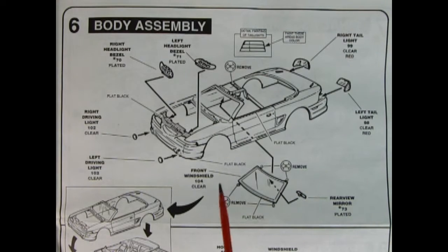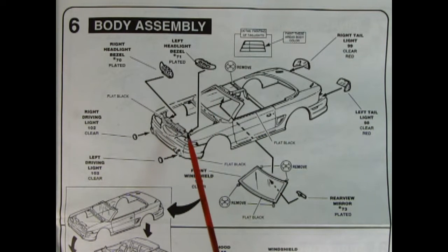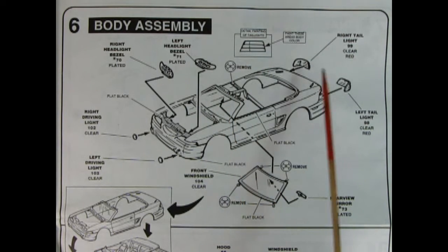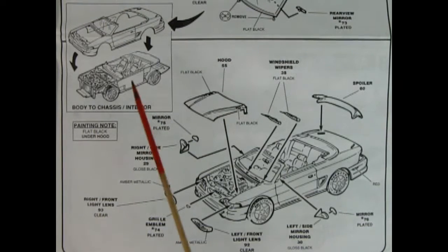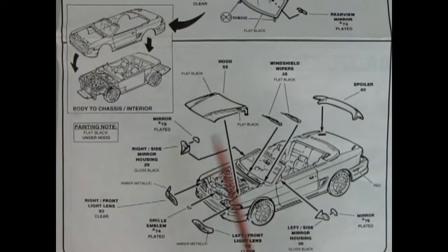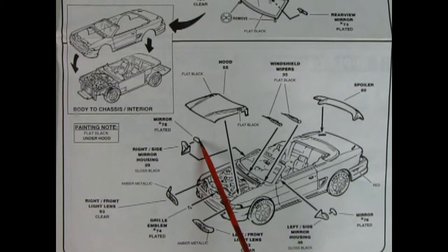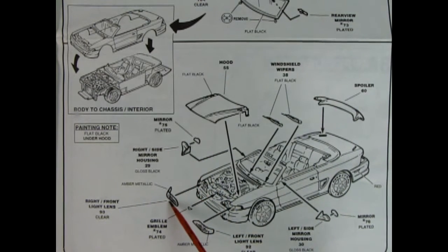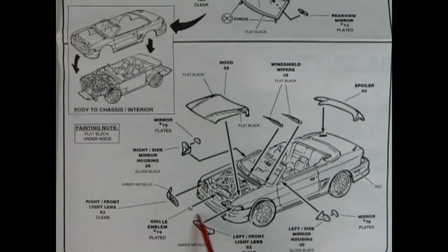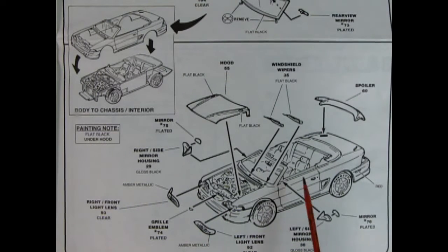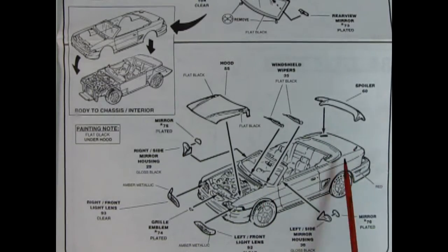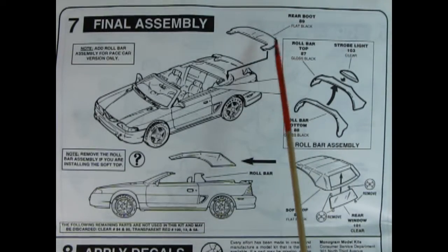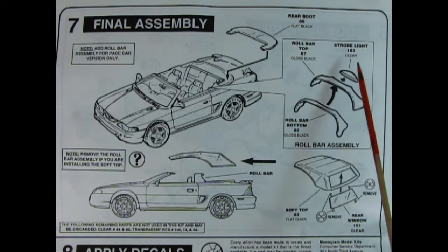Panel six shows our body assembly going together. Here you've got the body. It says to paint under here flat black. Put in the headlight bezels here and the driving lights. And then our windshield pops in place. There's a section here to remove. And we've got our tail lights and the rear view mirror. And then that goes down into here. And this is where we see the body being dropped to the chassis. Once that is done, then we drop our hood in place. Put in the chrome into our mirror housings. And then the front headlight covers. They go on. And then we've got a grill emblem with a little pony in there. And then our other mirror. There's our windshield wipers dropping in place and the rear spoiler.